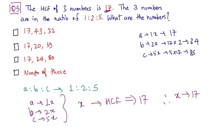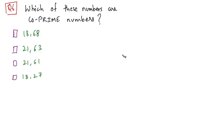None of these options contain our answer, so the answer is none of these. The final question: which of these numbers are co-prime numbers? If you recall, the highest common factor of co-prime numbers is 1. So the pair of numbers whose highest common factor is 1 are co-prime numbers.